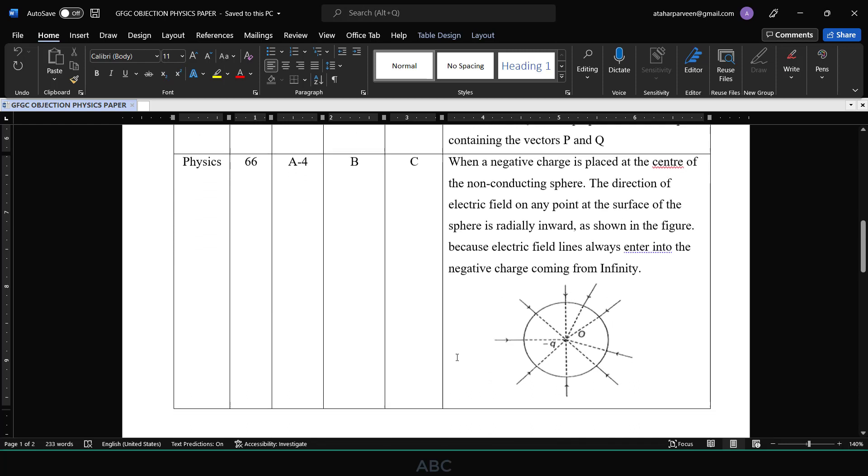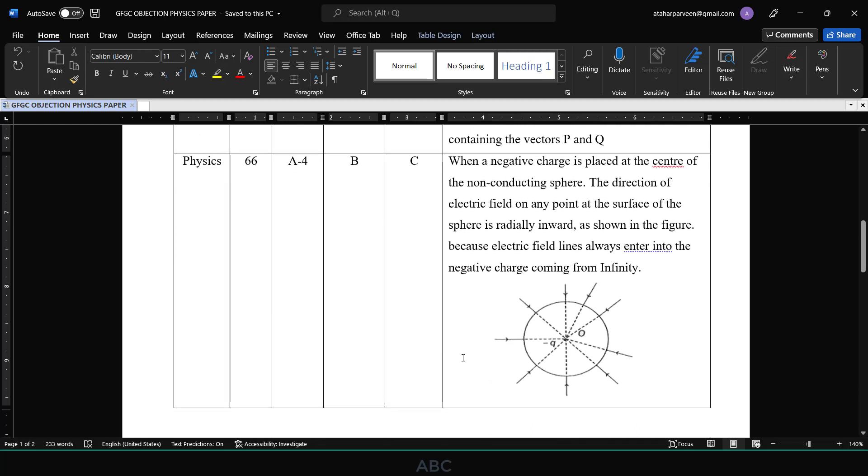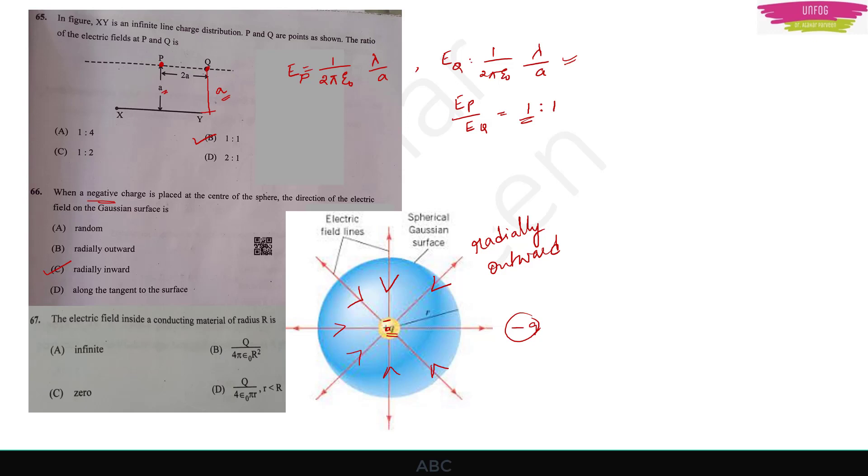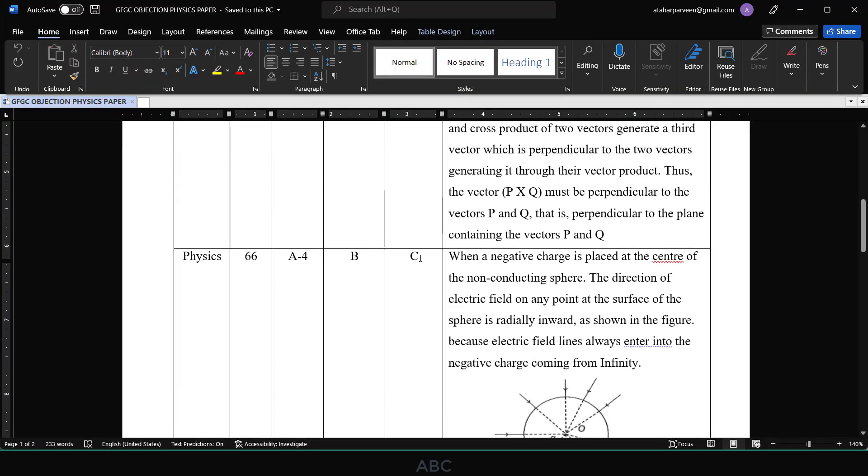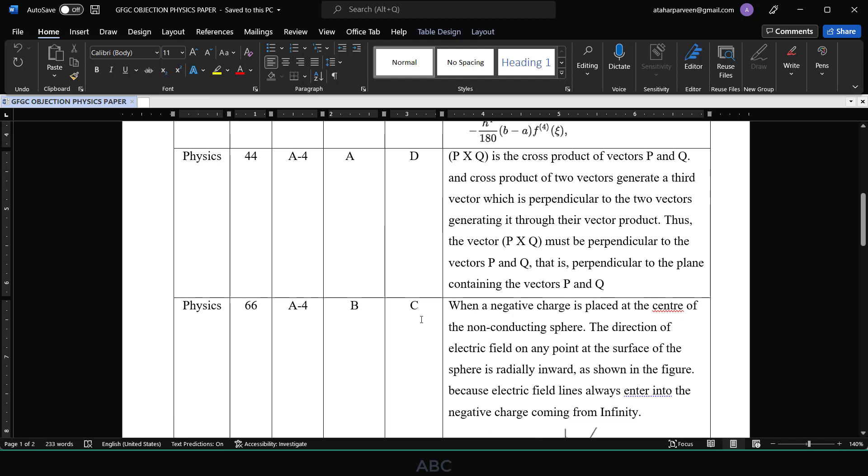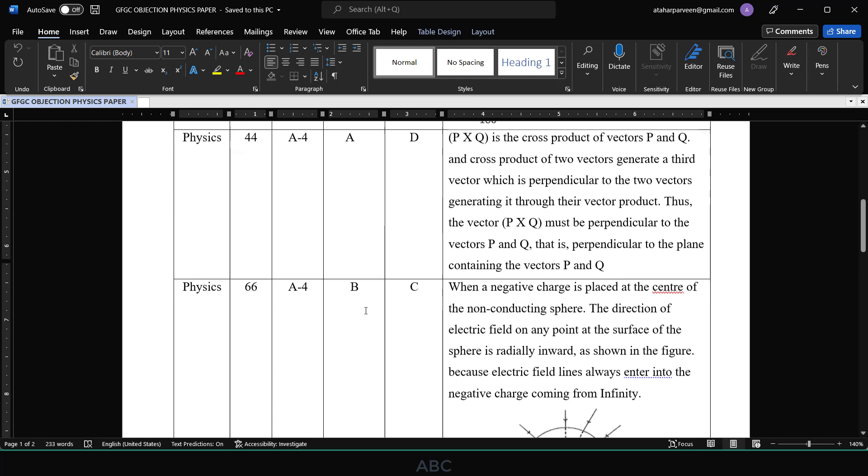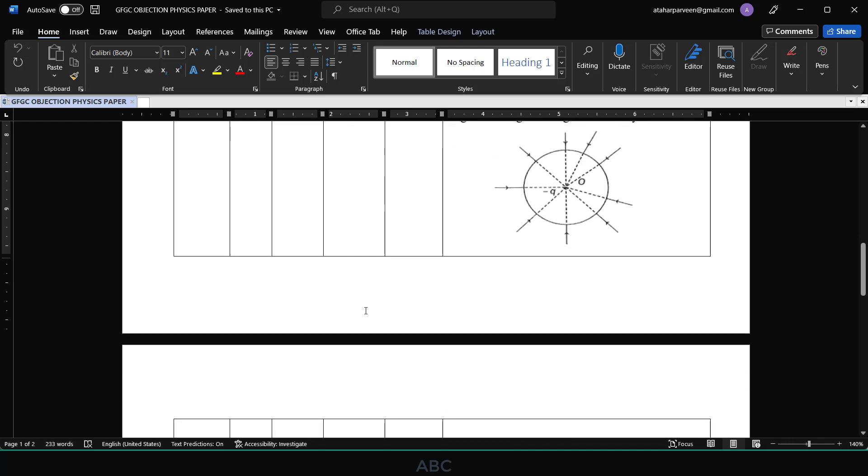Next question where I have raised the objection is question number 66. In first video, part 1, I have showed you how the electric field on the Gaussian surface should be radially inward if the charge minus q is at the center, because if there is charge plus q then the electric field is radially outward, that is option C. I have proposed option C but they have given option B in the provisional key, so I have raised this objection as well.